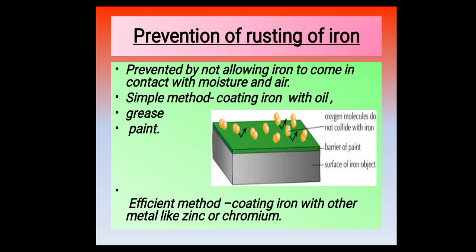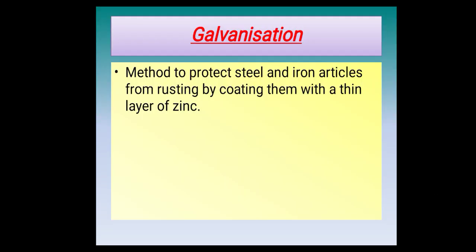The most effective method to prevent rusting is coating iron with another metal — one that does not rust easily — such as zinc or chromium. The method to protect steel or iron articles from rusting by coating them with a thin layer of zinc is known as galvanization. When we coat an iron article with a thin layer of zinc metal to prevent rusting, that process is called galvanization.